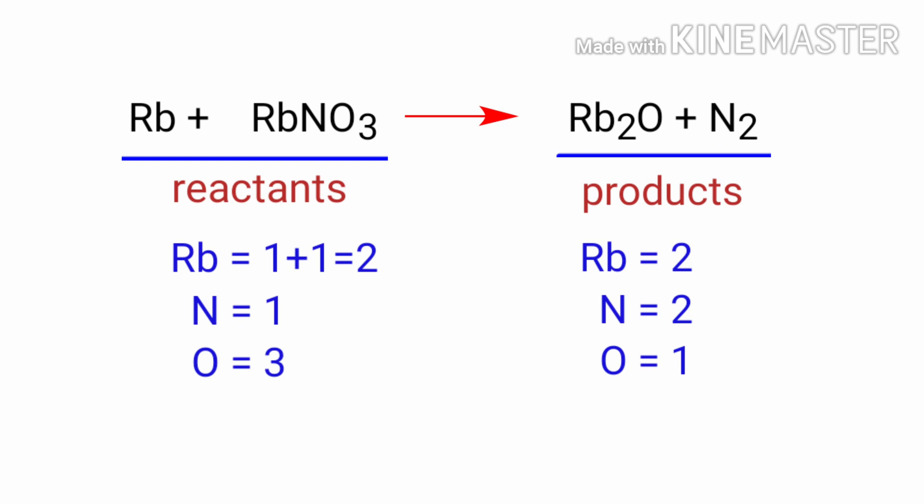In this equation, we need to balance the nitrogen atoms first. To do this, we need to put a coefficient of 2 in front of RbNO3. The nitrogen atoms are balanced.